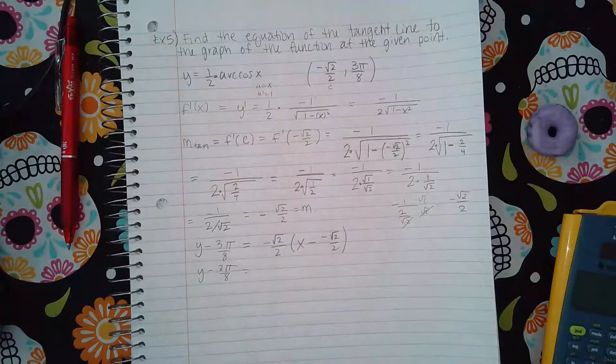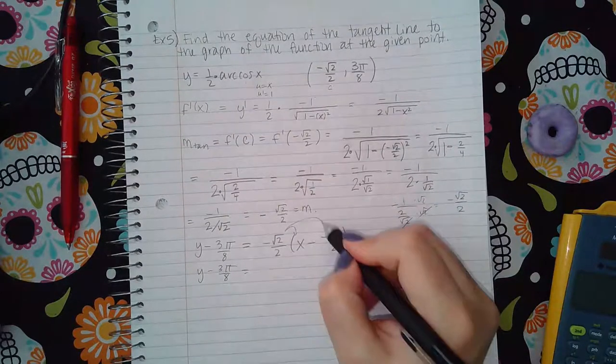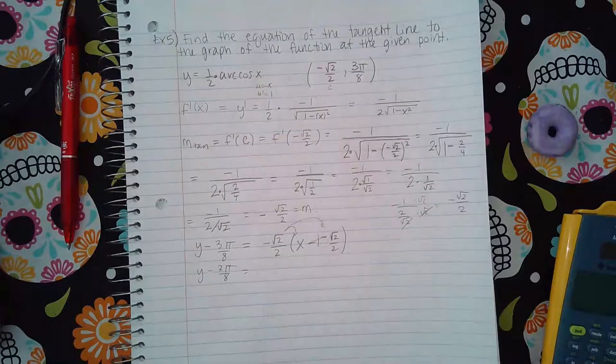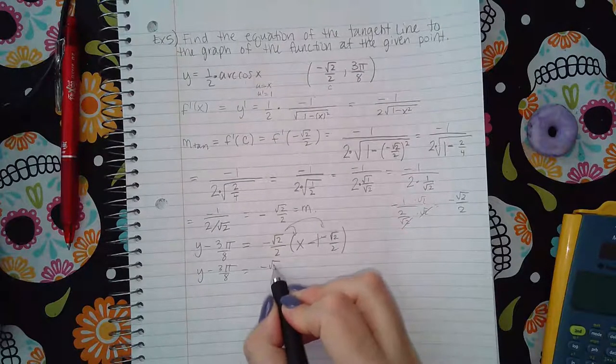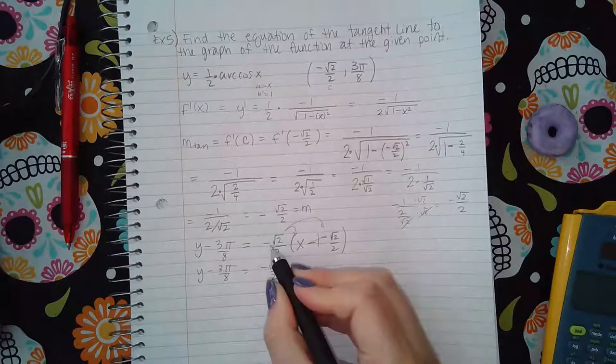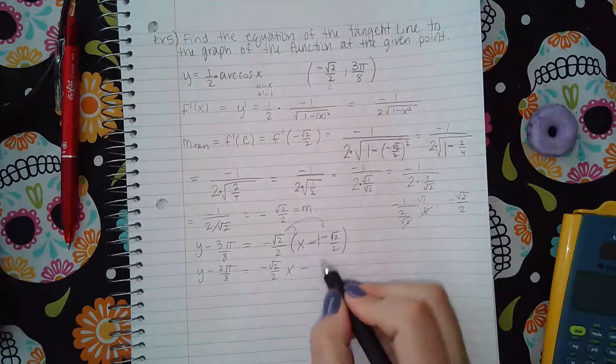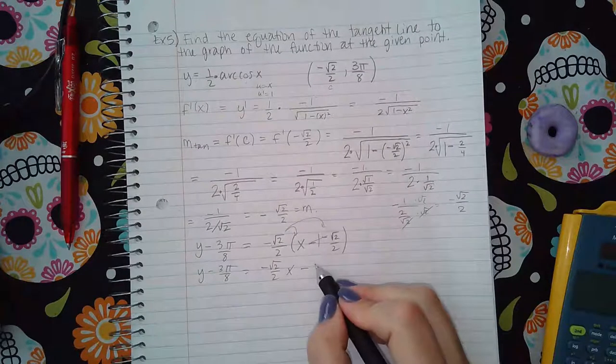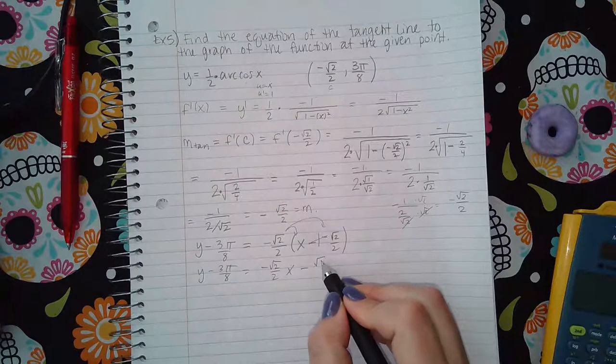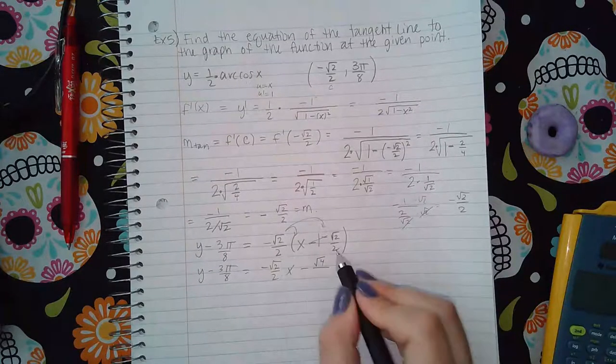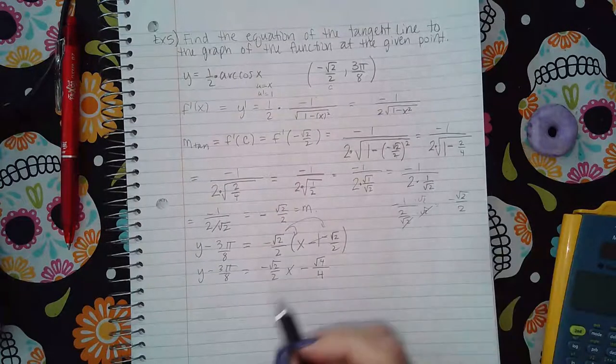And so then that's actually going to be a plus. So when I distribute this, this is actually going to be a giant plus sign, so it's going to be negative square root of two over two x.